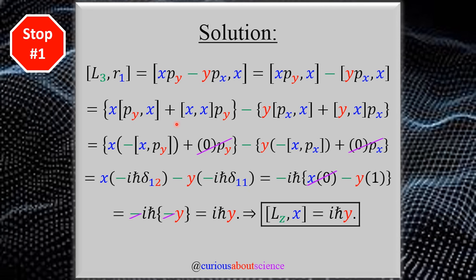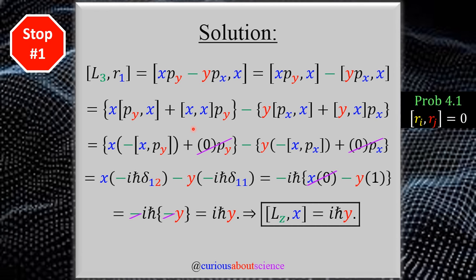The PDF has all the nitty-gritty details, so check that out. We see we have a mixture of momentum-position, position-position, momentum-position, and position-position commutators. From chapter one, question 4.1, position commutes with position, so it is zero — so x,x goes to zero and y,x goes to zero. To evaluate momentum and position, we need to switch the order at the cost of a negative sign. And from 4.1, R and P commute to iℏ·δᵢⱼ, the Kronecker delta.